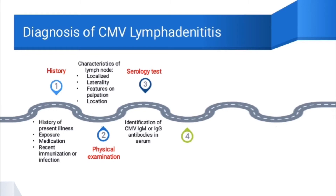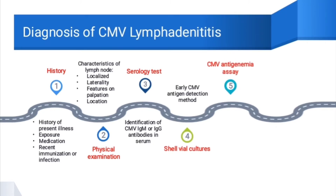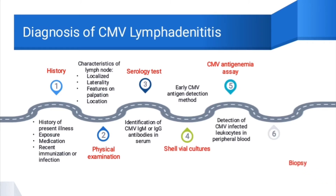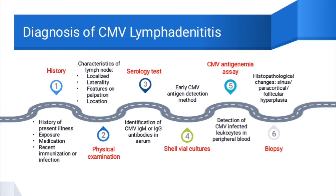One of the laboratory tests performed is serological tests, where CMV antibodies in the serum are identified. Shell vial culture is also performed, which detects CMV antigen at an early stage. Another diagnostic test is CMV antigenemia assay, which can detect CMV-infected leukocytes in the peripheral blood. Lastly, biopsy of the lymph node tissue is performed, where histopathological changes include sinus, paracortical, or follicular hyperplasia.